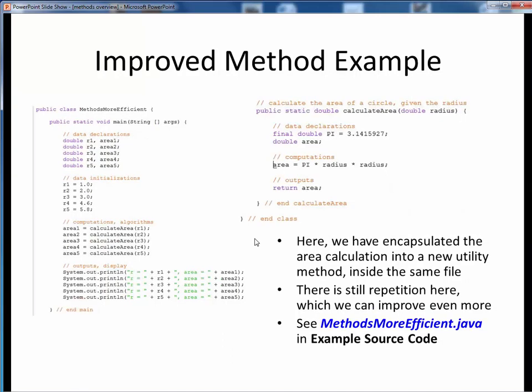Here's a slightly improved version of the previous example. Notice that here we've encapsulated the area calculation into its own dedicated method, calculateArea. Also, notice that our declaration of pi has been removed from the main method and relocated into the method in which it's needed. While this is an improvement, notice that there is still code repetition that we could improve. Please take a moment now to pause this video and view the short code walkthrough for methodsmoreefficient.java. Open up this file in JGrasp so you can follow along. You'll find this example in the example source code module on Canvas.